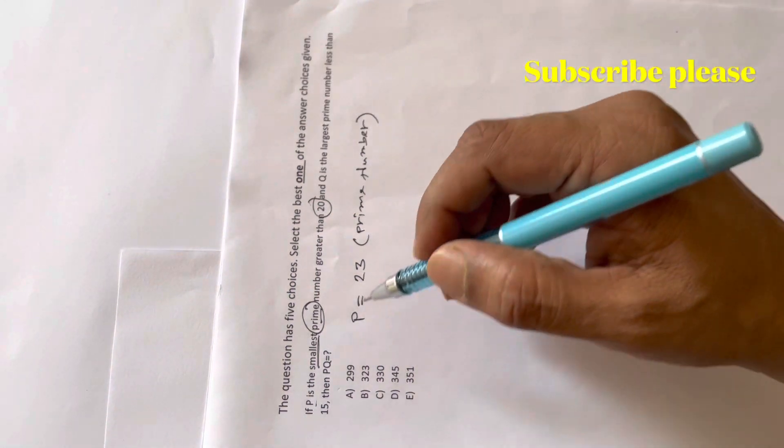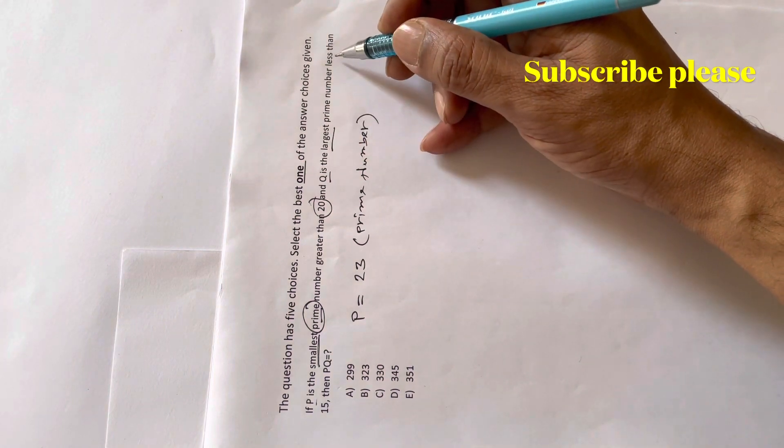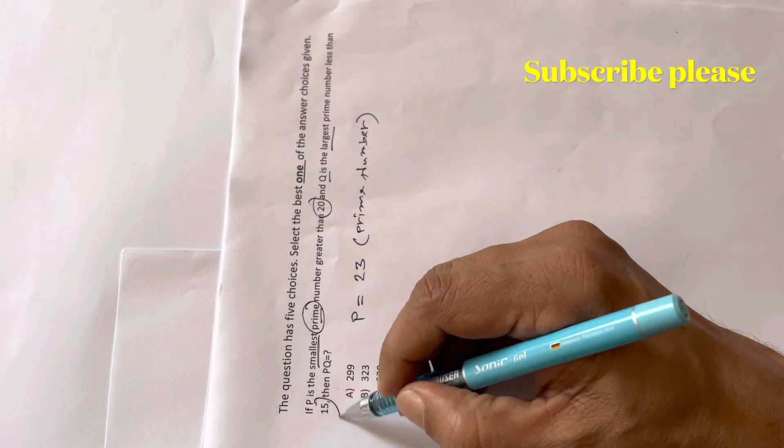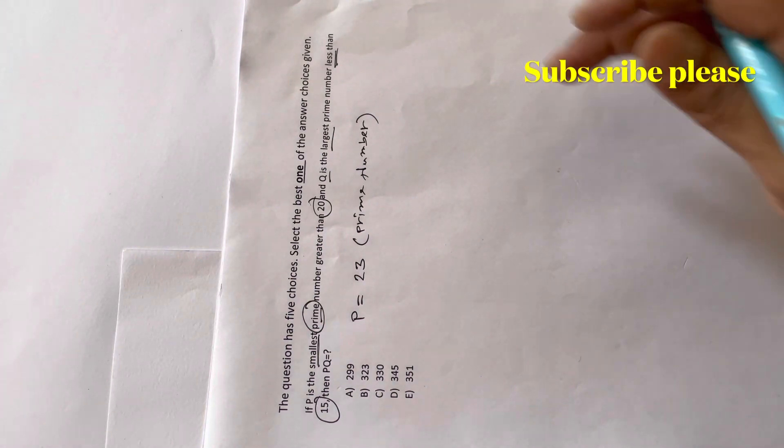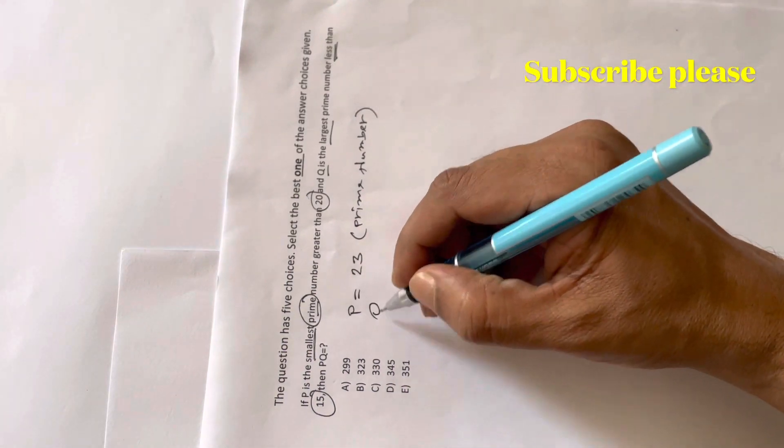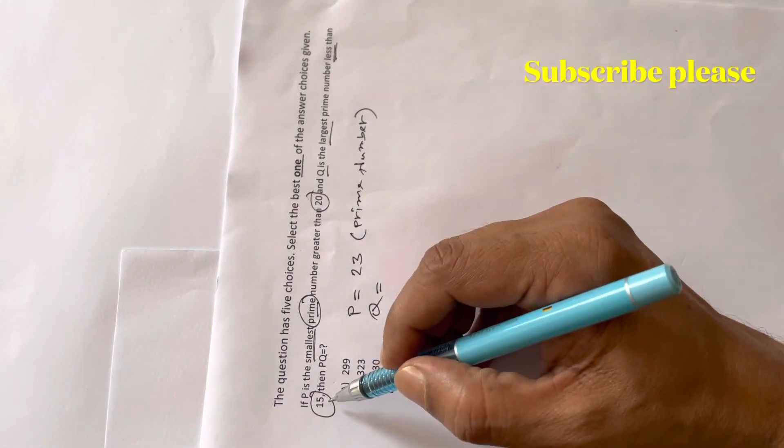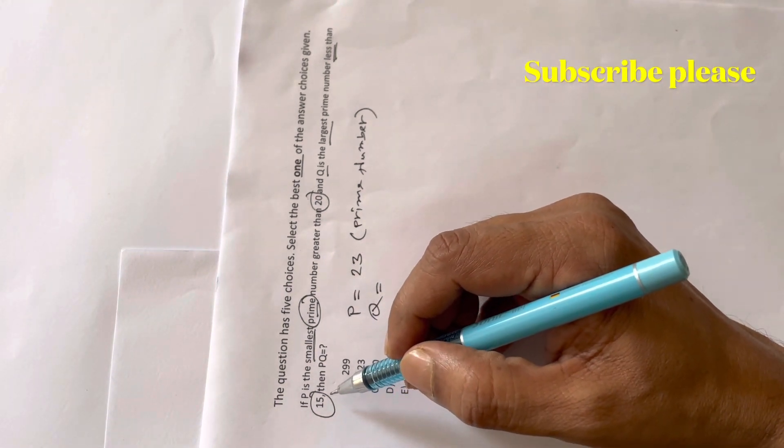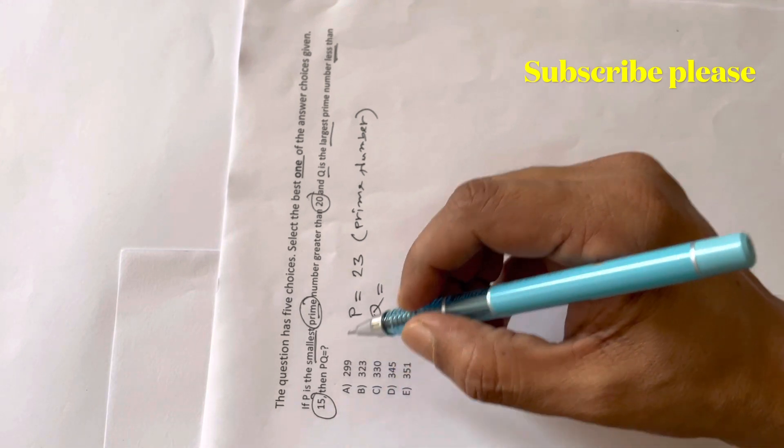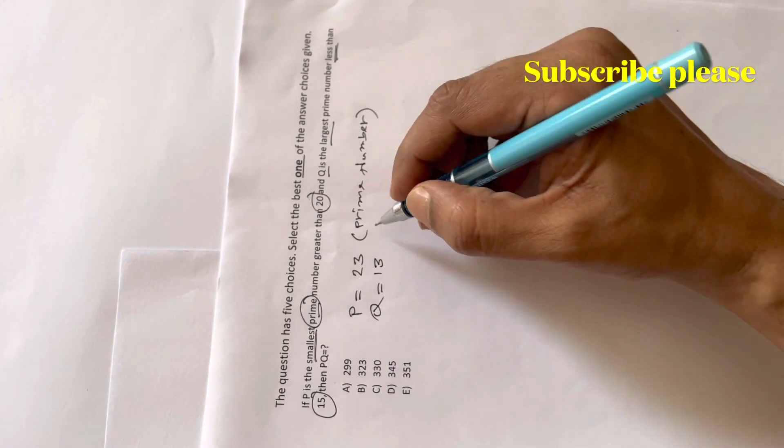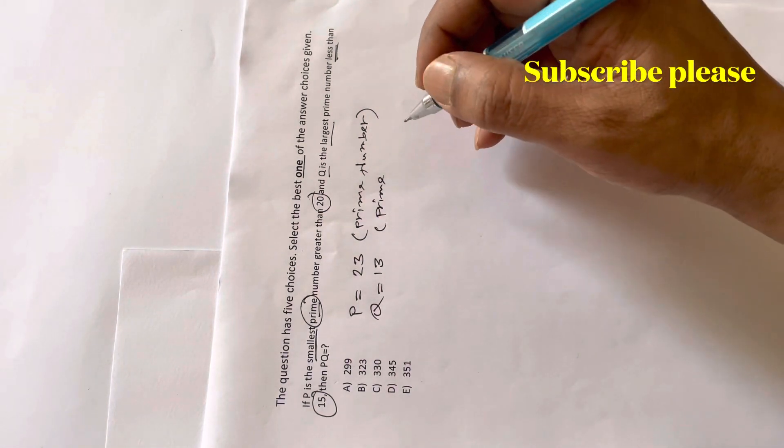And for q, q is the largest prime number less than 15. So 15 is a composite number. 14 is also a composite number. But 13 is a prime number less than 15, so q equals 13.